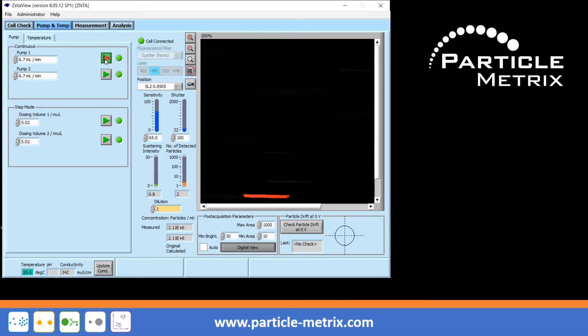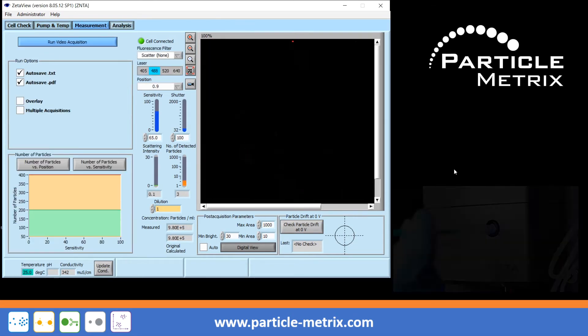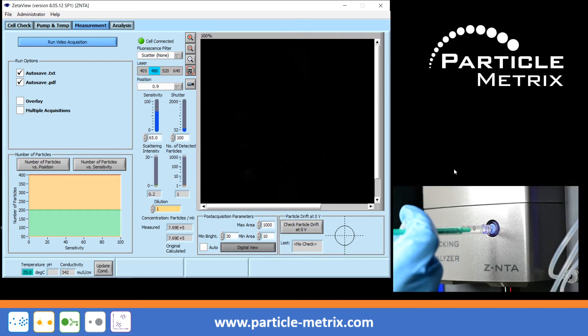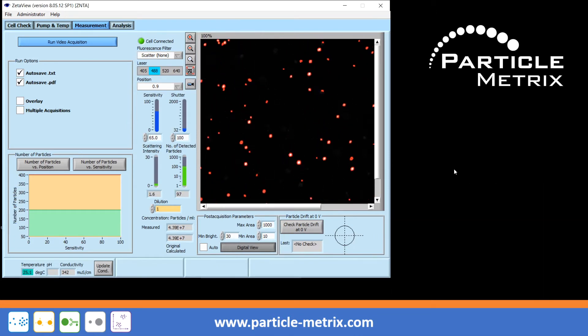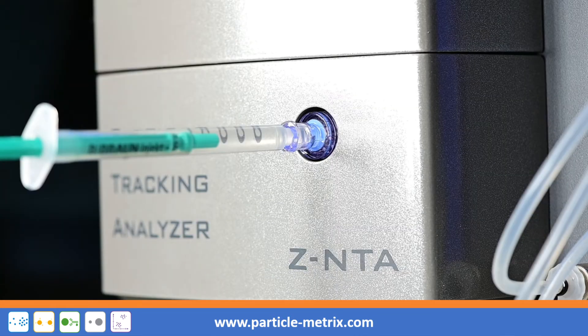If an air bubble appears and the system is already filled with a sample, you can try to inject a little more sample with a short, forceful push from the syringe to move the air bubble away. The prerequisite for this is that the syringe with the sample is still located at the injection port and that there is still some sample volume left in the syringe.